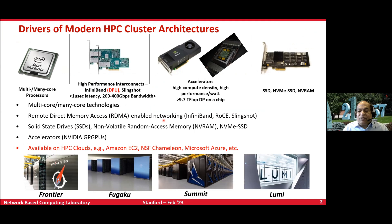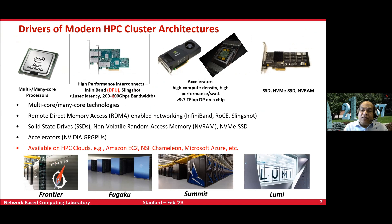As many of you know, these days we see — whether it's the top 500 systems, data centers, or clouds — all these systems are being designed in a commodity manner. We have multi-core and many-core processors, high-performance interconnects like InfiniBand and Slingshot, with InfiniBand also having a DPU version, and accelerators from all different vendors, as well as different kinds of SSDs with NVMe support.